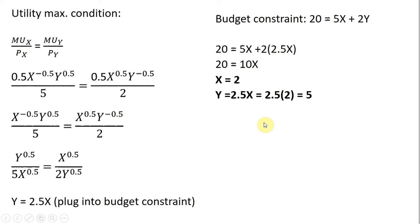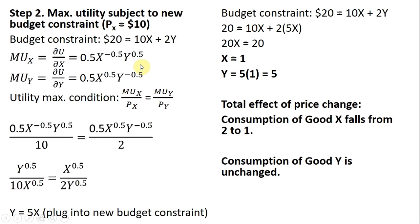Next, we do the same thing but with the price of good X now at $10. The marginal utilities don't change. Setting up the utility maximizing condition and dividing by the respective prices — the only difference is that instead of 5, we now have 10 for the price of good X. Simplifying gives Y equals 5X. Plugging this into the budget constraint, we find X equals 1 and Y equals 5 — again matching the graphical result.